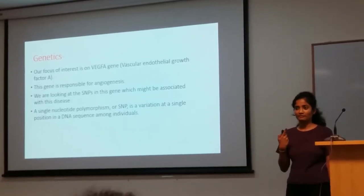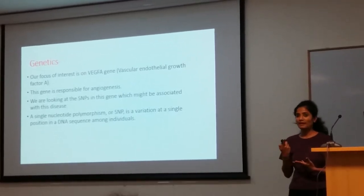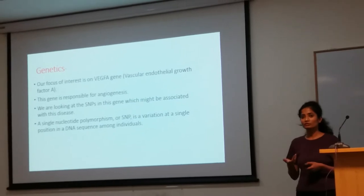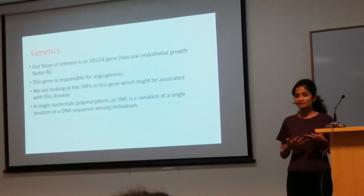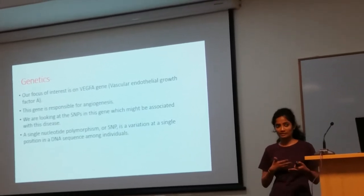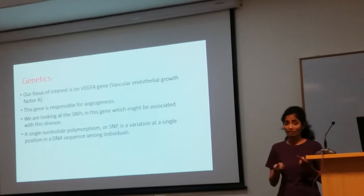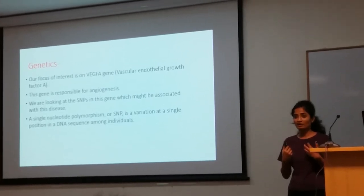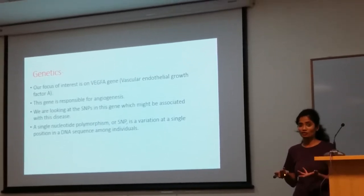Diabetic retinopathy involves a pressure buildup in the eye. What happens is there is an upregulation of the VEGF gene. VEGF is majorly responsible for angiogenesis — the formation of new blood vessels. When there is damage to the blood vessels due to diabetic retinopathy and high pressure buildup in the eye, new blood vessels form from existing ones. These new blood vessels are very weak, leading to hard exudates and leakage of fluids.